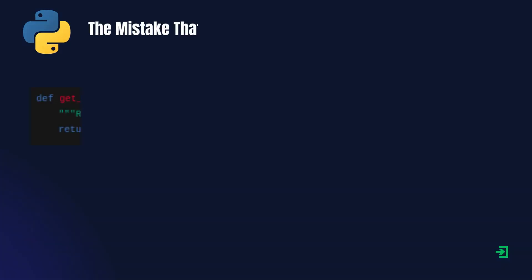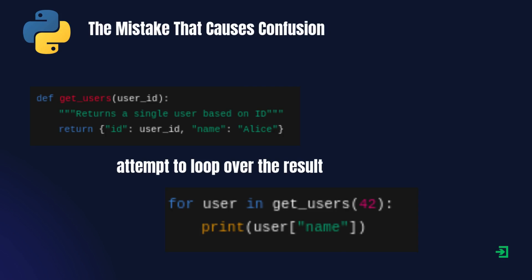Look at this function getUsers. It sounds like it returns multiple users, but it actually returns just one user. If someone mistakenly loops over it expecting a list, they'll hit a type error.